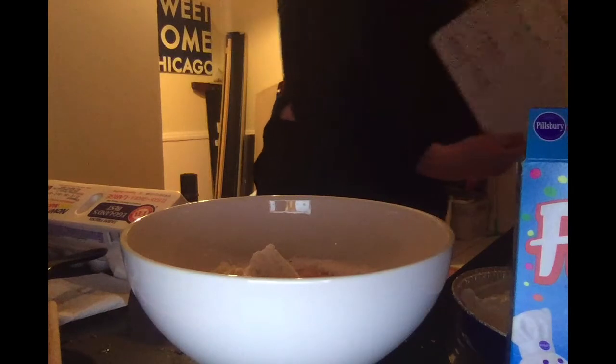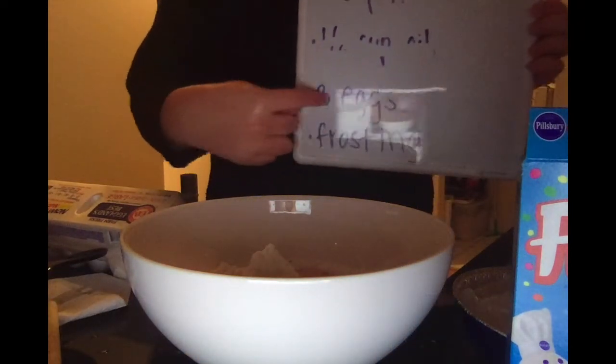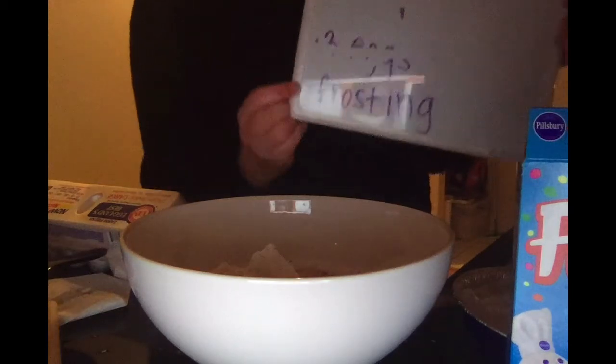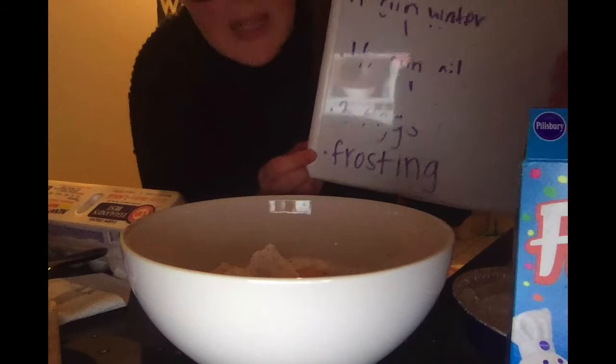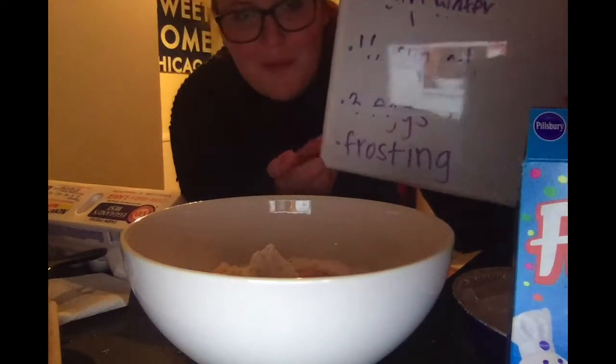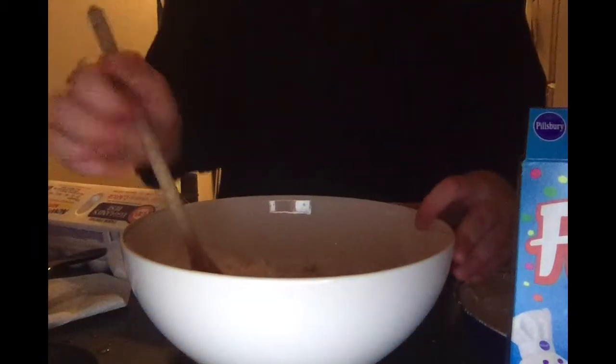And three. So we've added our three eggs. After you do eggs, sometimes you need to wash your hands so nothing else gets dirty. We've added our three eggs, so we can cross that off our list. The next ingredient on our list is frosting, but we usually use that after we bake the cake.